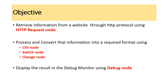The objective of this video is to retrieve information from a website through the HTTP protocol using the HTTP request node of Node-RED, process it and convert that information into a required format using the CSV node, switch node, and change node, and finally display the result in the debug monitor using the debug node.